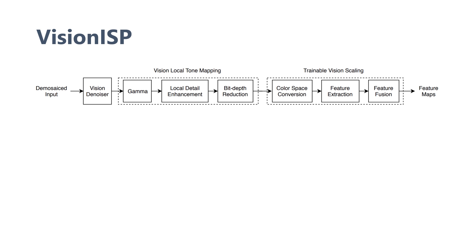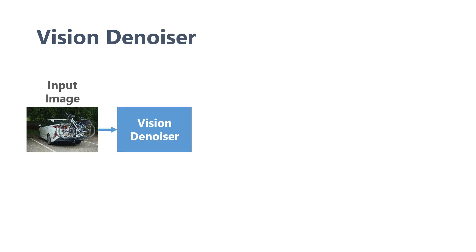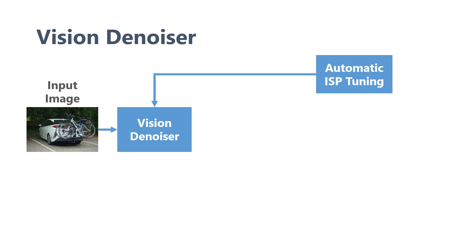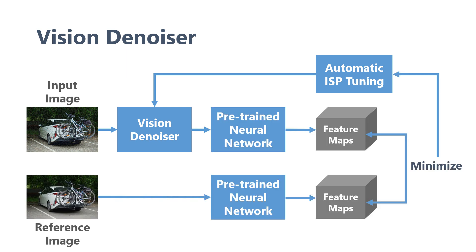The blocks in Vision ISP are simple, content-aware, and trainable. The first block is a computer vision-driven denoiser that tunes an existing ISP without modifying the underlying algorithms and hardware design. Our ISP tuning algorithm tunes the denoising parameters to minimize a high-level content loss in the denoised images. We calculate this loss on feature maps extracted from a target neural network that is pre-trained to perform a particular computer vision task. In this way, the denoiser learns to preserve what's important in the image for the target machine vision task.